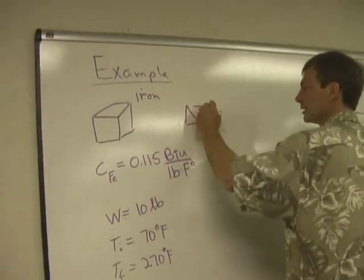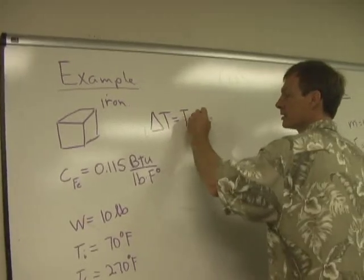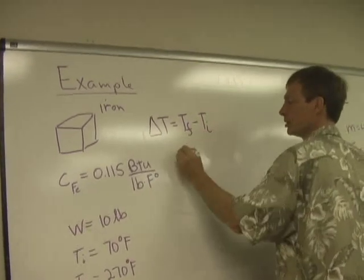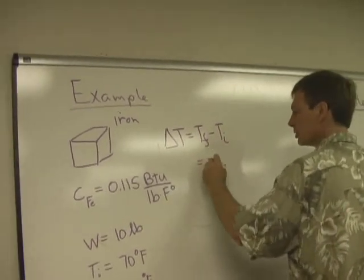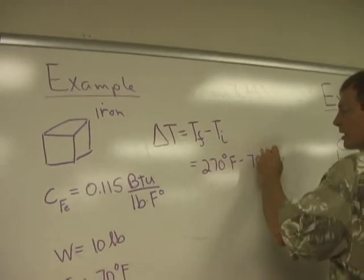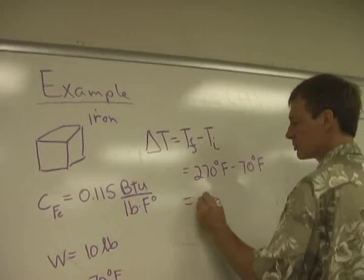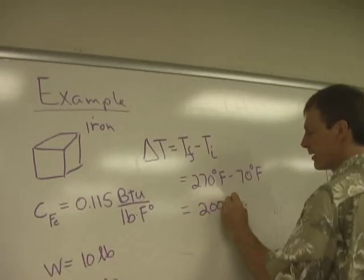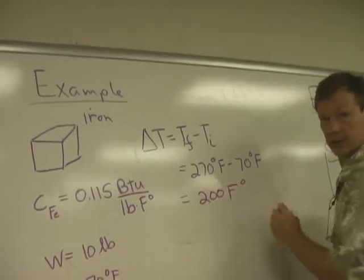So the temperature difference delta T is equal to the difference between the final temperature and the initial temperature, which is going to be 270 degrees Fahrenheit minus 70 degrees Fahrenheit, which gives me 200. That's a temperature difference, so it's Fahrenheit degrees.